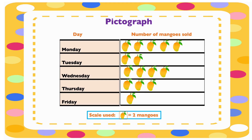Now let's look at the pictograph and find out when the largest sale was made. The largest sale was made on Monday, and the least sale was made on Friday.